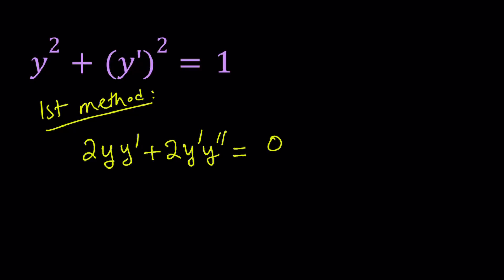Two motivations behind this: first, I want to get rid of the squares and make it nicer. Second, we have a constant on the right-hand side, and by differentiating we get 0. That's nice because with differential equations you want to get 0 on the right-hand side, which gives you a homogeneous equation.